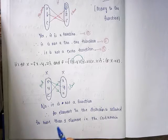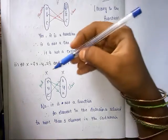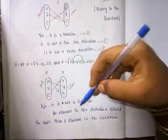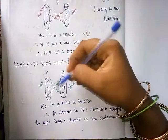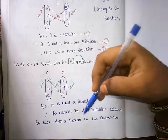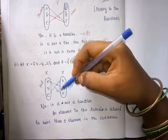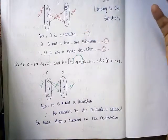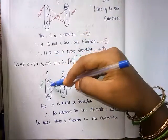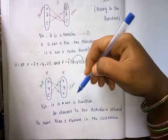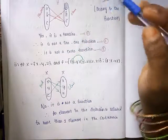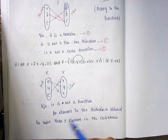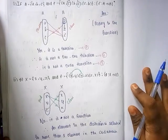In the explanation: there is one element in the domain — that is x — and it is related to more than one element in the co-domain. There are two elements mapped from x. One element in the domain maps to two elements in the co-domain, so it is not a function. That is our final answer.